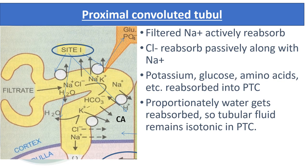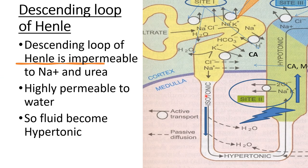At the proximal convoluted tubule (site 1), sodium filtered through the glomerulus enters the proximal tubule where it is actively reabsorbed, and chloride is passively reabsorbed. Potassium, glucose and amino acids are also reabsorbed from the proximal convoluted tubule, and proportionately water is reabsorbed. The tubular fluid remains isotonic in the proximal convoluted tubule. In the descending loop of Henle, the tubule is impermeable to sodium and urea, so they remain in the tube, but it is highly permeable to water, so water is reabsorbed and the fluid becomes hypertonic.